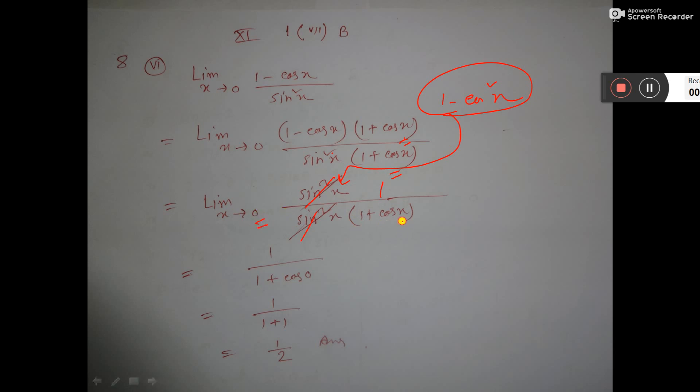As x tends to 0, you put 0 here. Now cos 0 equals 1, so 1 plus 1 equals 2. Therefore, 1 by 2 is the answer, and that's all.